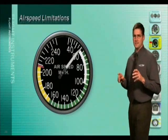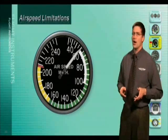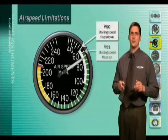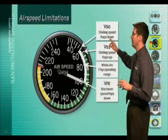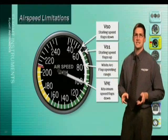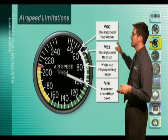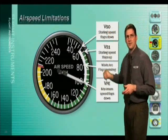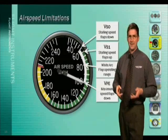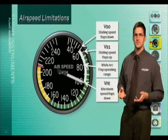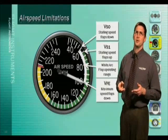Now let's take a look at some airspeed limitations and we'll start with the white arc. The white arc represents the flap operating range in your aircraft. At the bottom of the white arc is the airspeed limitation called VSO. The V stands for velocity or speed, the S stands for stalling, and the O stands for operation in a certain configuration — in this case the lowest allowable airspeed with the flaps and the landing gear down, or the landing configuration. Operation below this airspeed in the landing configuration will allow the airplane to stall.